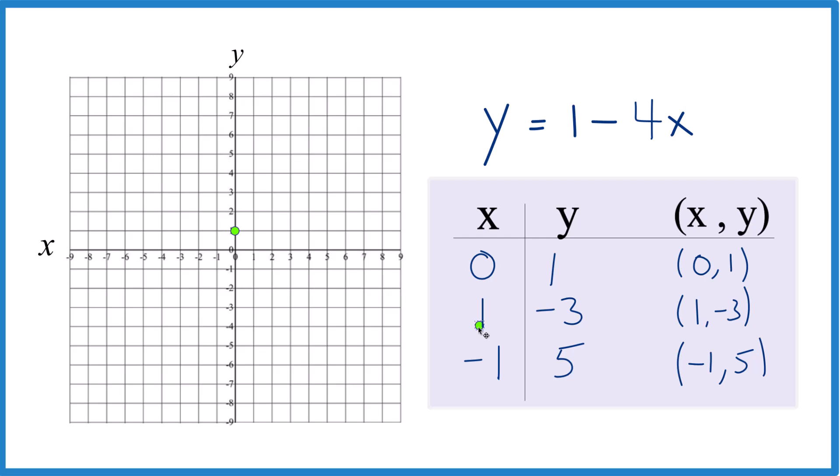Then we have x is 1, and then y is negative 3. So here's 1 for x, negative 3. And you could do a line with just two points. I like 3 because if I made a mistake, I'll usually catch it this way.